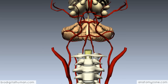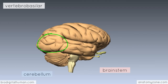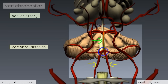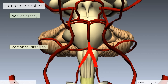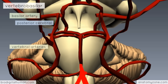Coming back to the 3D model, the second source of blood is the vertebrobasilar system, which provides the posterior circulation — supplying the cerebellum, brainstem, and posterior parts of the cerebral hemispheres. The basilar artery, highlighted in yellow, is formed by the union of the two vertebral arteries at the level of the inferior aspect of the pons. With the brainstem added in, you can see the basilar artery running in the midline in front of the pons. When it reaches the midbrain, it splits into the posterior cerebral arteries.